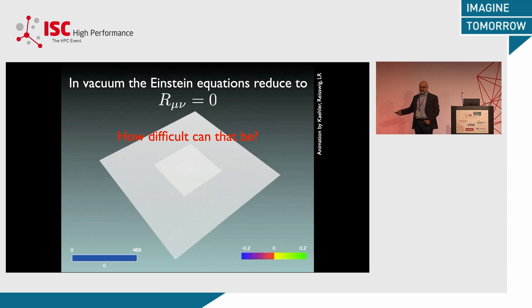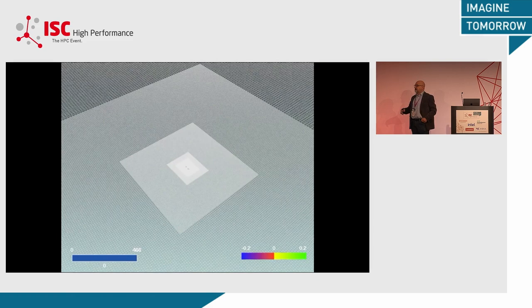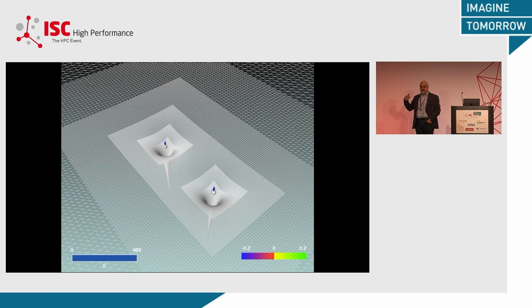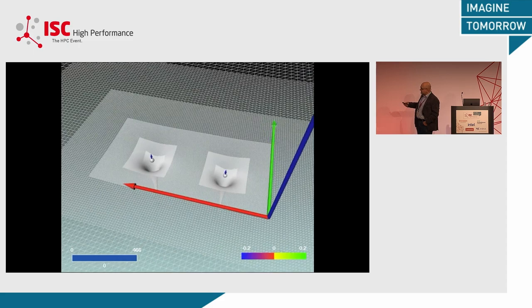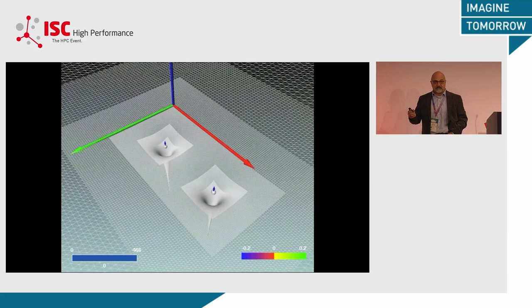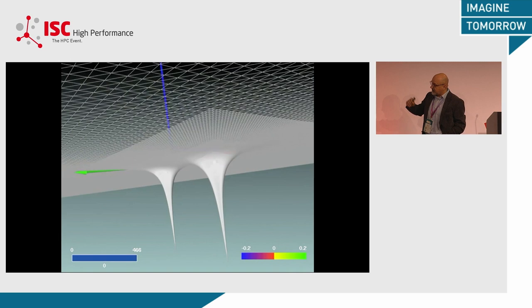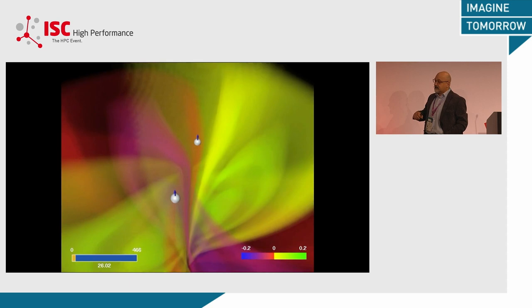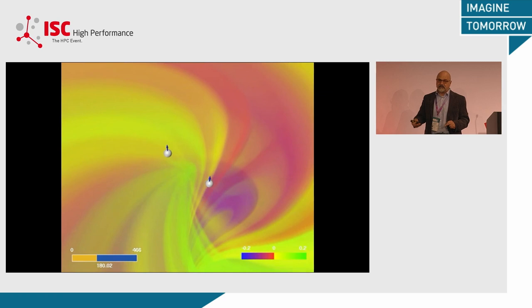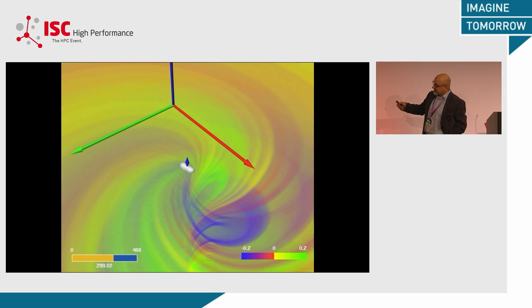The way you solve this is by setting up a complex grid structure with mesh refinement — high resolution where spacetime is particularly highly curved. As shown in this animation, these are two black holes with the same mass but different spin in the vertical direction. You can see how rapidly curvature changes near the black hole, which is why you need very high resolution. You start with initial data, then the equations of motion and the emission of gravitational waves are all contained in those equations.